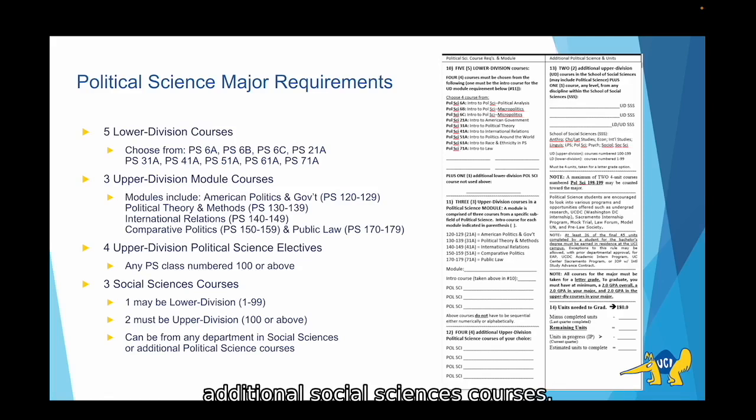The final requirement is the three additional social sciences courses. A max of one can be a lower division course while the other two must be upper division courses. These classes can be anything under social sciences so if you wanted to take a sociology class or an econ class that would be applied here. You can still take political science courses if you would like but sometimes it's nice to branch out.